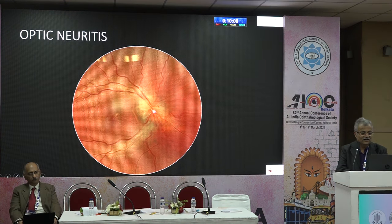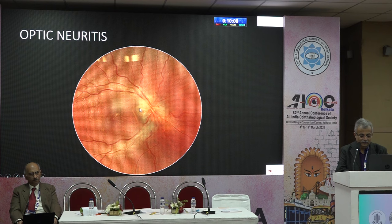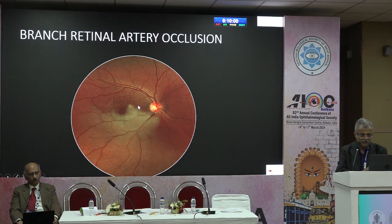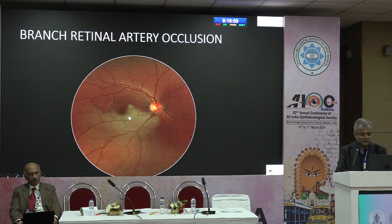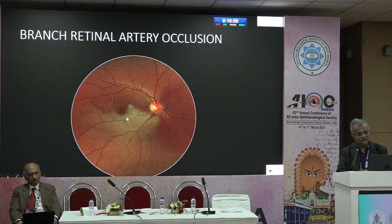This is a classic case of optic neuritis with optic disc swelling and engorged vessels; there will also be a relative afferent pupillary defect and color vision would be affected. This is a classic cherry red spot — the infarcted retina appears whitish. This is a branch artery occlusion with a visible thrombus.